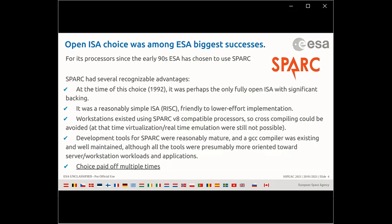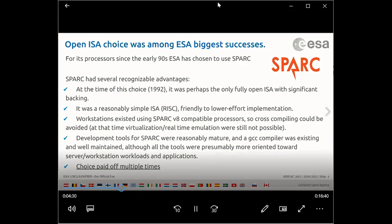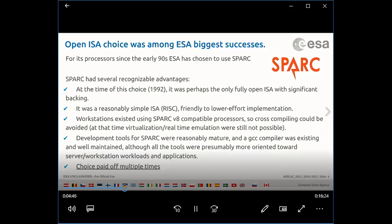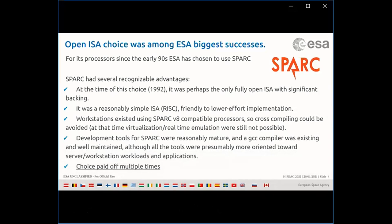Europe has succeeded in remaining competitive in the space segment of the market despite difficulties and the much smaller size of this market. The strategy of following its own line of space processor, made in 1992, generated several commercially successful chipsets. When it was made in 1992 the choice was SPARC — perhaps the only fully open ISA with significant backing at the time. This choice paid off multiple times, as designing SPARC processors can be done without any license whatsoever.